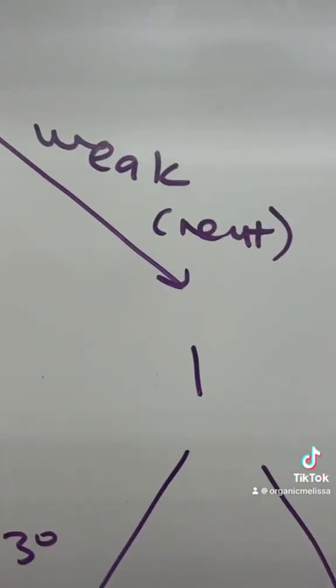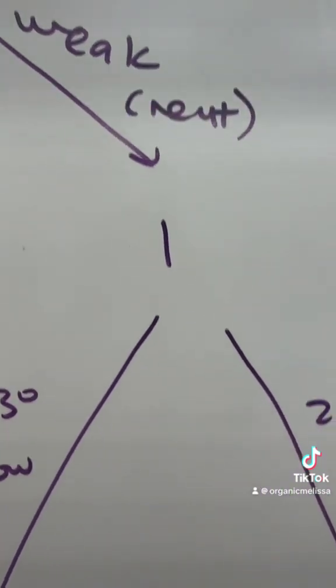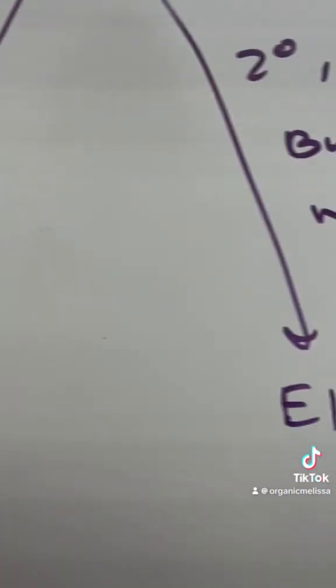Now, if your nucleophile is weak, which generally means neutral, it's going to favor a one reaction, either SN1 or E1.